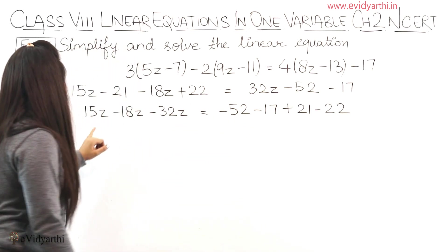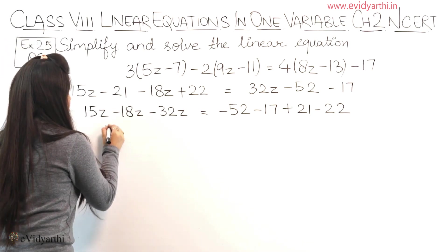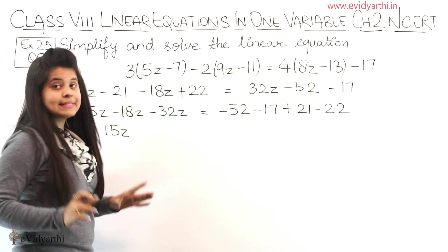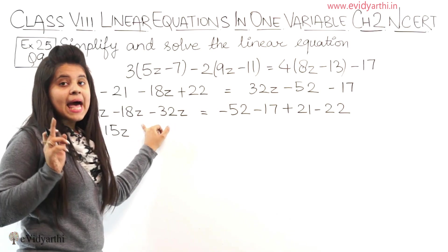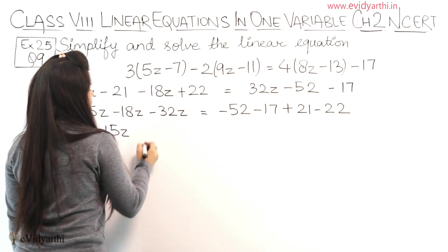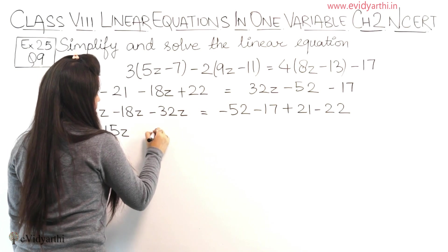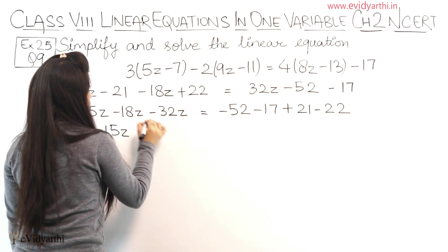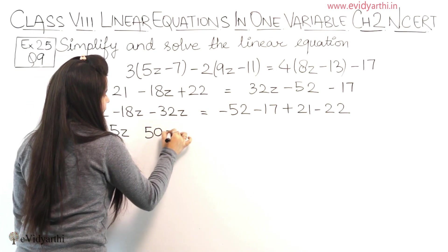Now let's solve this. First, write 15z as it is. Minus minus becomes plus, so these two numbers add together. 18 plus 32 is 50, so we have 50z.